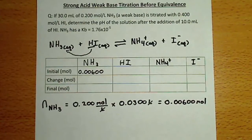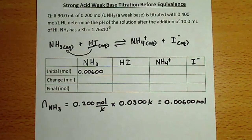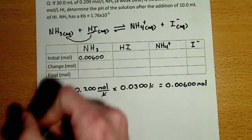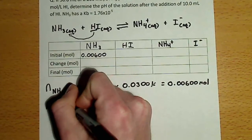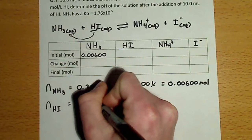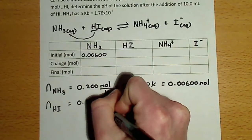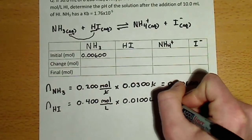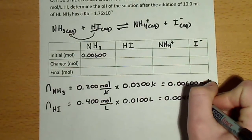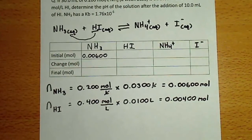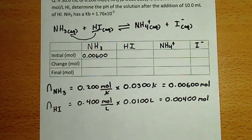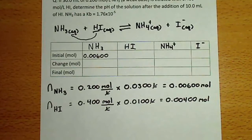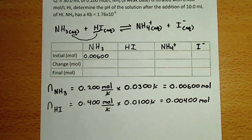We were also given a concentration and volume of hydroiodic acid, so let's solve for the number of moles using the exact same process. I multiply concentration by the volume in liters, converting 10 milliliters into liters by dividing by 1000. When I multiply those values, liters cancel, leaving me with a value of 0.004 moles. I can put that information in the initial row of my ICF table for hydroiodic acid.